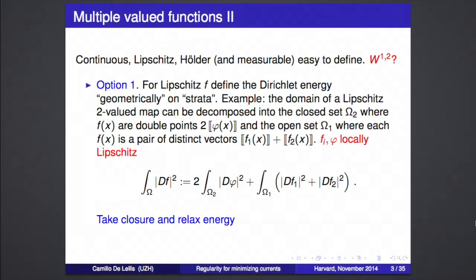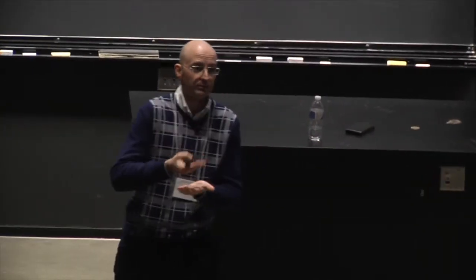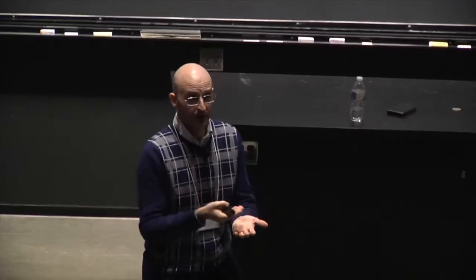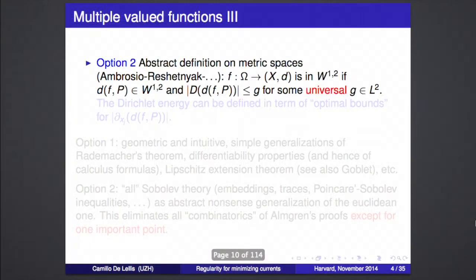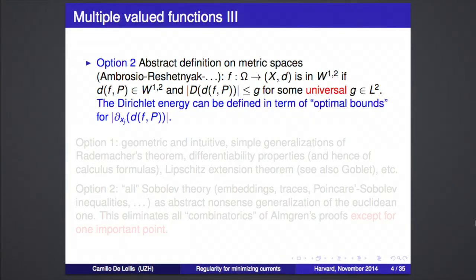If there is a uniform bound on the Dirichlet energy, the sequence converges somewhere. One thing you could do is: once you have the Dirichlet energy, complete the space of Lipschitz maps and create a Sobolev space. Looking at the literature — this was our starting point — there is another option: give an abstract definition on a metric space of what a W^{1,2} map is, taking values on a metric space starting from a Euclidean one.